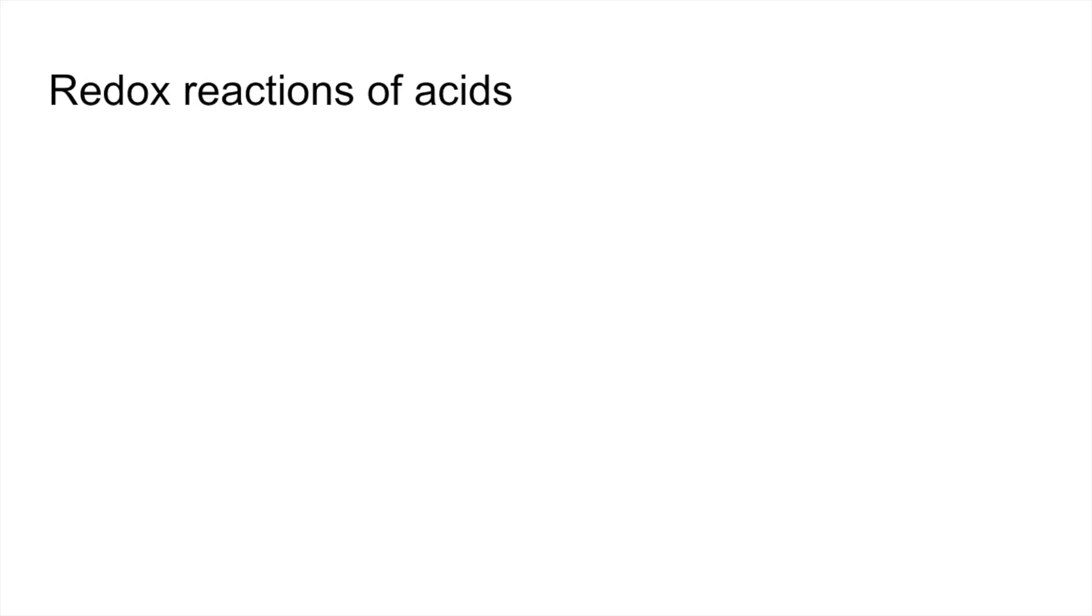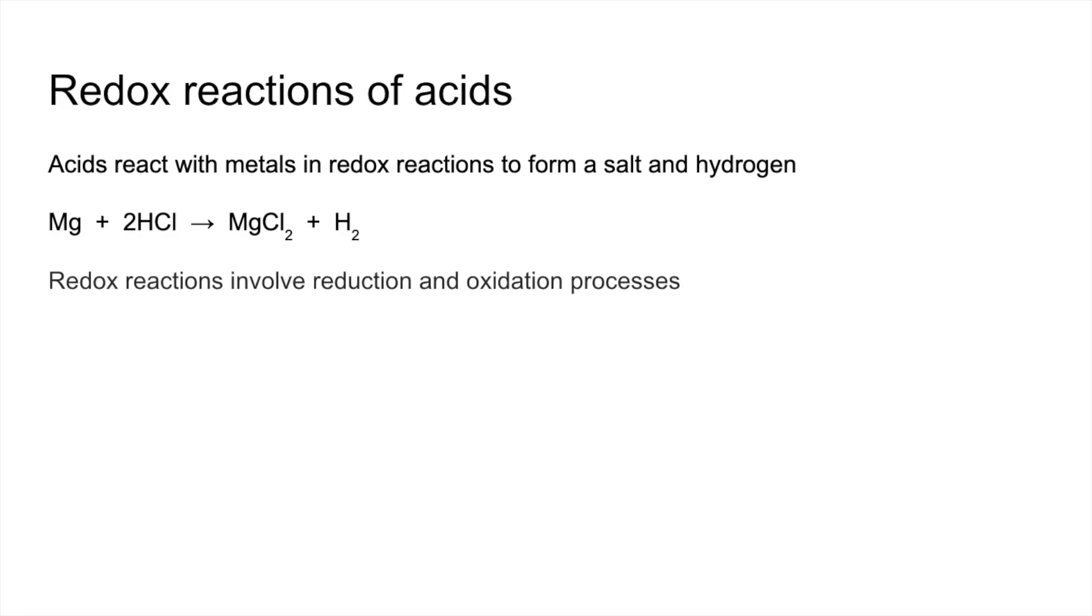And finally redox reactions of acids. So when acids react with metals it's a redox reaction not a neutralization reaction. And we get a salt and hydrogen. So the example I've chosen is magnesium with hydrochloric acid making magnesium chloride and hydrogen. That's a redox reaction because it involves a reduction and an oxidation process.